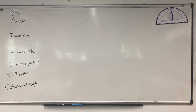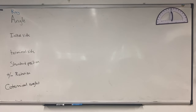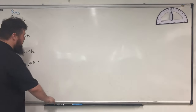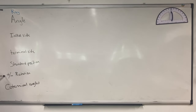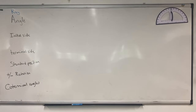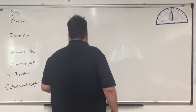Welcome to your first class of Pre-Calc. Now that we've finished the Algebra 2 review, we're going to start with some vocabulary. Some of these words you should recognize from geometry, including ray and angle. We're going to jump into some more stuff you should also know - positive versus negative rotation - but let's start back with some of the more basic items: a ray.